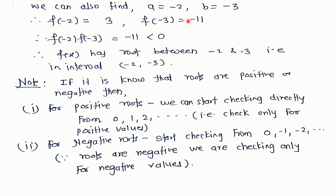Similarly, I have found another interval in which f(x) has a root. I have chosen a = -2 and b = -3. The value of f(-2) = 3 and f(-3) = -11. Therefore f(-2) × f(-3) = -11, which is less than 0. Therefore f(x) has a root that lies in the interval (-2, -3).